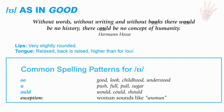U as in good. The lips are very rounded and the tongue is relaxed — the back of the tongue is raised and slightly higher than for the O. Common spelling patterns: double O as in good, look, childhood, understood; the letter U as in push, full, pull, sugar; OULD as in wood, could, should; and the spelling exception 'woman,' which is spelled with an O.